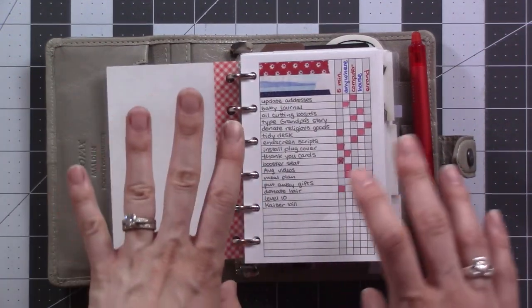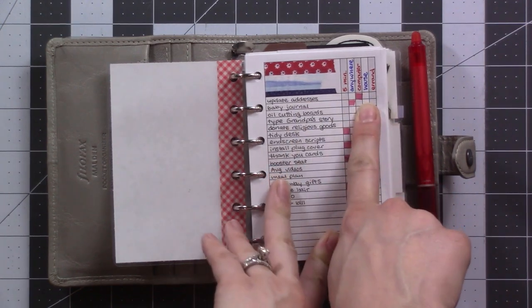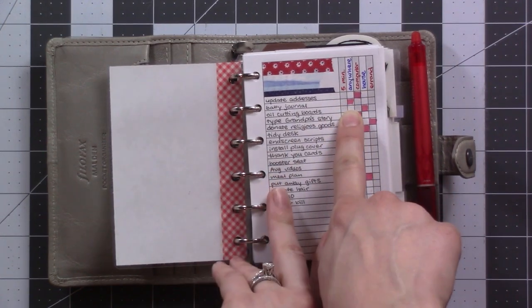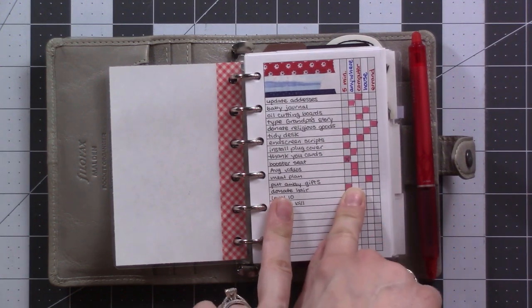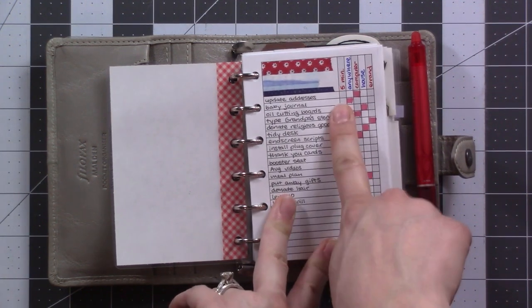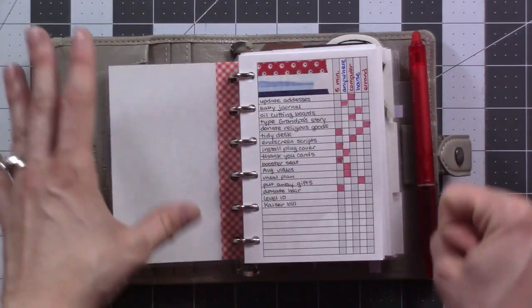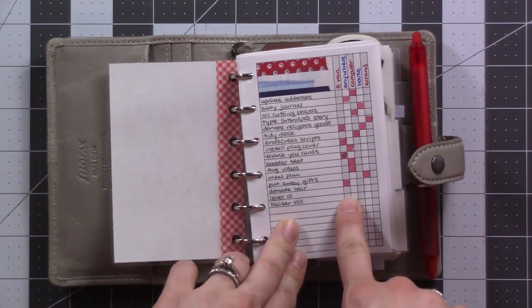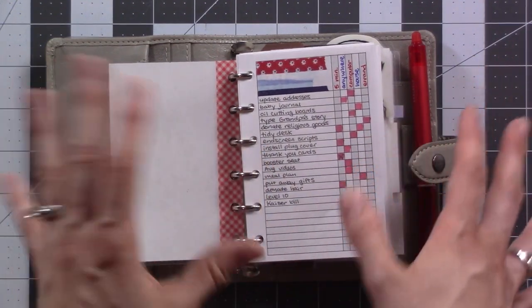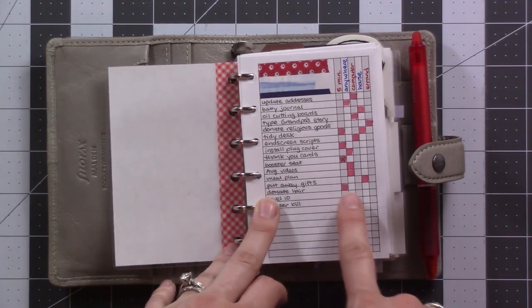So the first section here is my context list. I changed the categories. Before it was like phone and planner were the first two. I changed them to five minutes and anywhere. The five minutes is supposed to encourage me to just do some of these things that I've been putting off that really wouldn't take that long. If it's something that I can do in five or ten, whatever at a stretch, or at least do part of in five minutes, I'm putting a mark there.